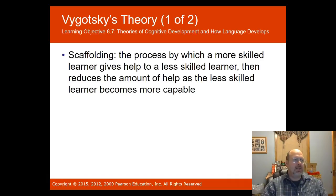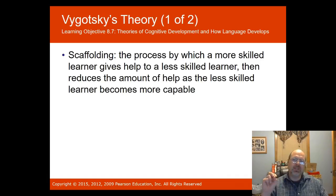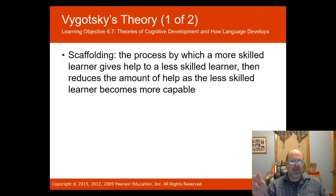Vygotsky's theory of scaffolding is a process by which a more skilled learner gives help to a less skilled learner, then gradually reduces the amount of help as the less skilled learner becomes more capable. For instance, an older sibling can be key to helping a younger sibling learn new skills through scaffolding.